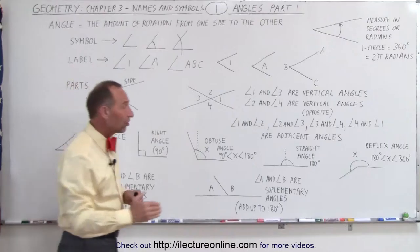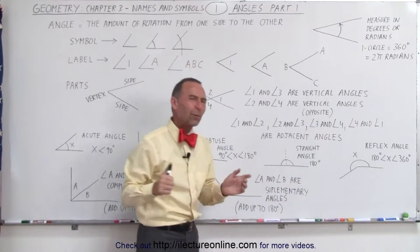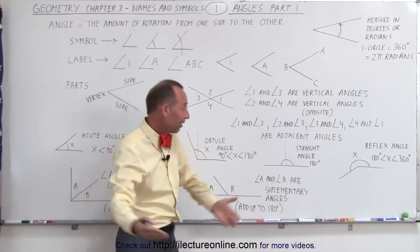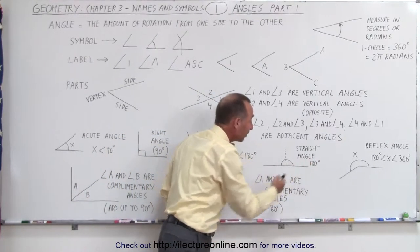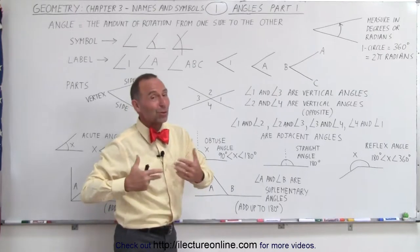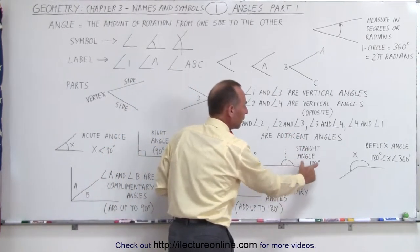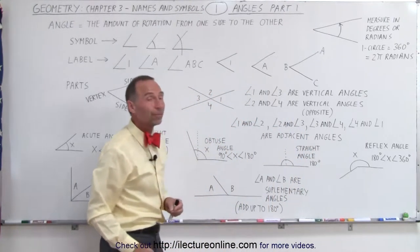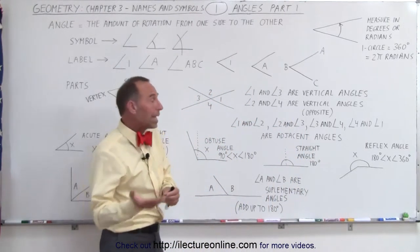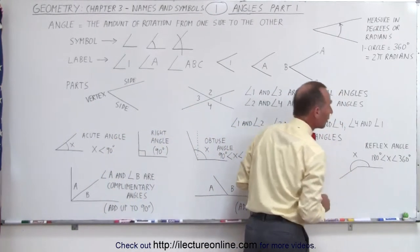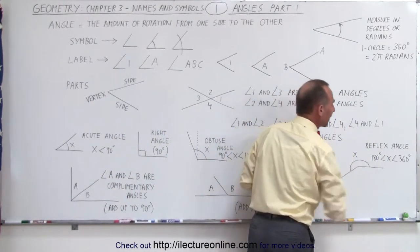And if the angle is exactly equal to 180 degrees, and that one always bothered me a little bit. How can you have an angle of 180 degrees? Because it gives you a straight line, but in geometry, we do consider that an angle as well. And we call it a straight angle, when the angle is exactly equal to 180 degrees. And then if the angle is greater than 180 degrees, but less than a full circle, 360 degrees, we call that a reflex angle.